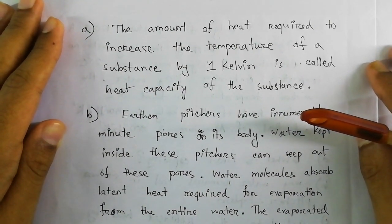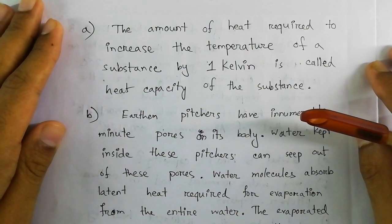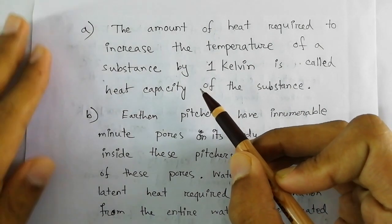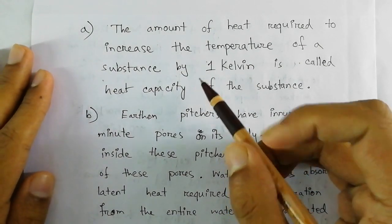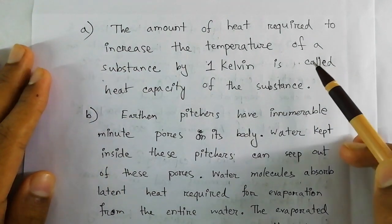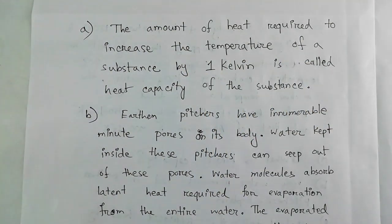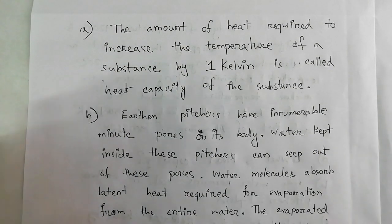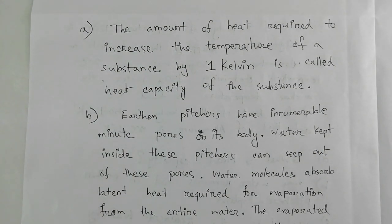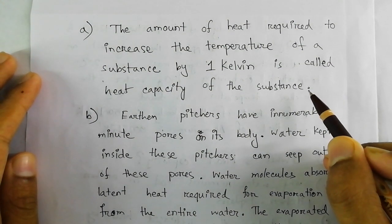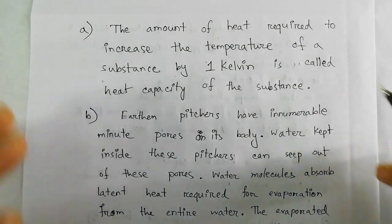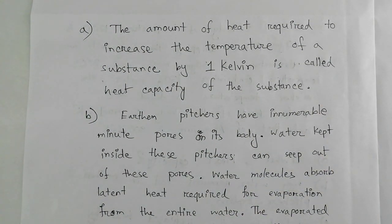The solution to the first question — what is heat capacity — is now on screen. The definition is: the amount of heat required to increase the temperature of a substance by one kelvin is called the heat capacity of that substance. This definition is collected from the textbook, and you can follow this one or use your own textbook.